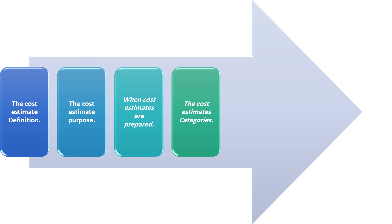Point four — cost estimate categories: cost estimates are divided mainly into three major categories. One: conceptual cost estimates, elaborated using incomplete project documentation. Two: semi-detailed cost estimates, developed when a project has been partially designed. Three: detailed cost estimates, based on fully developed construction drawings and specifications.